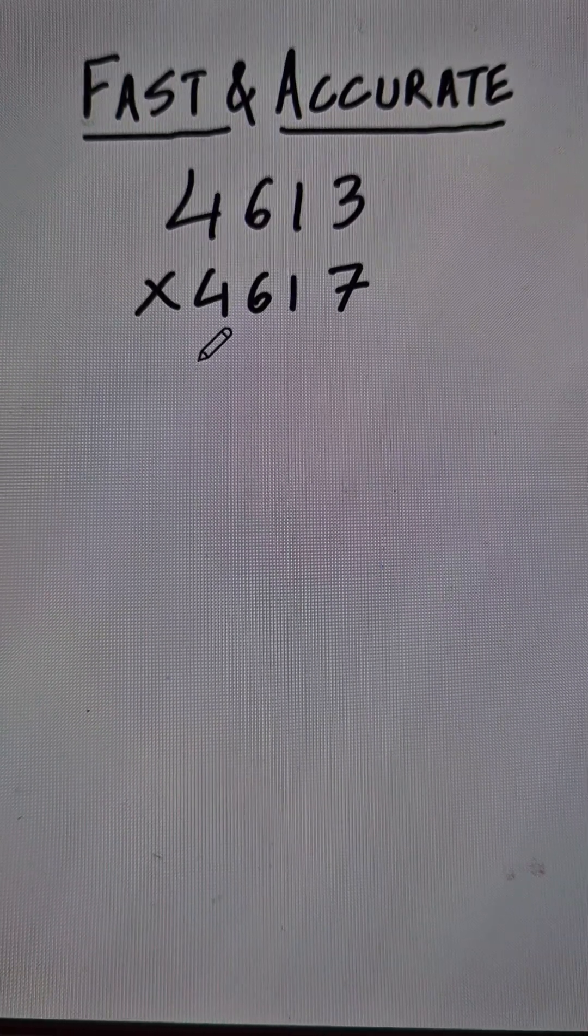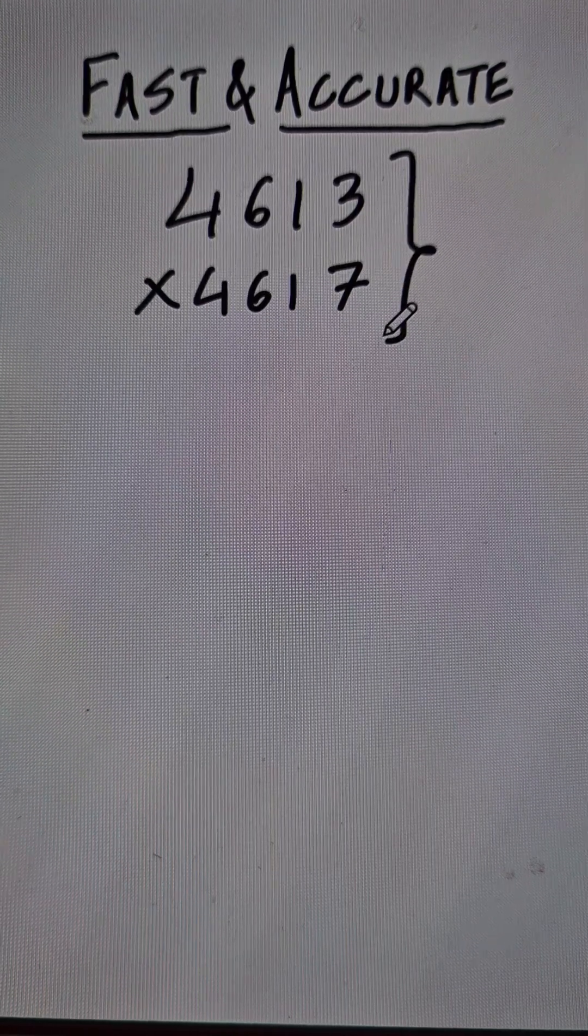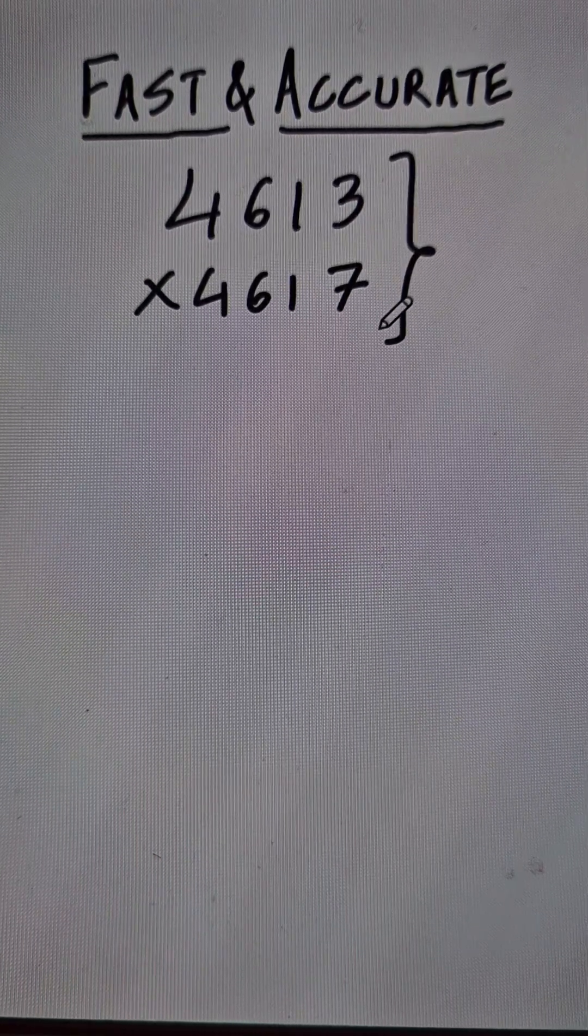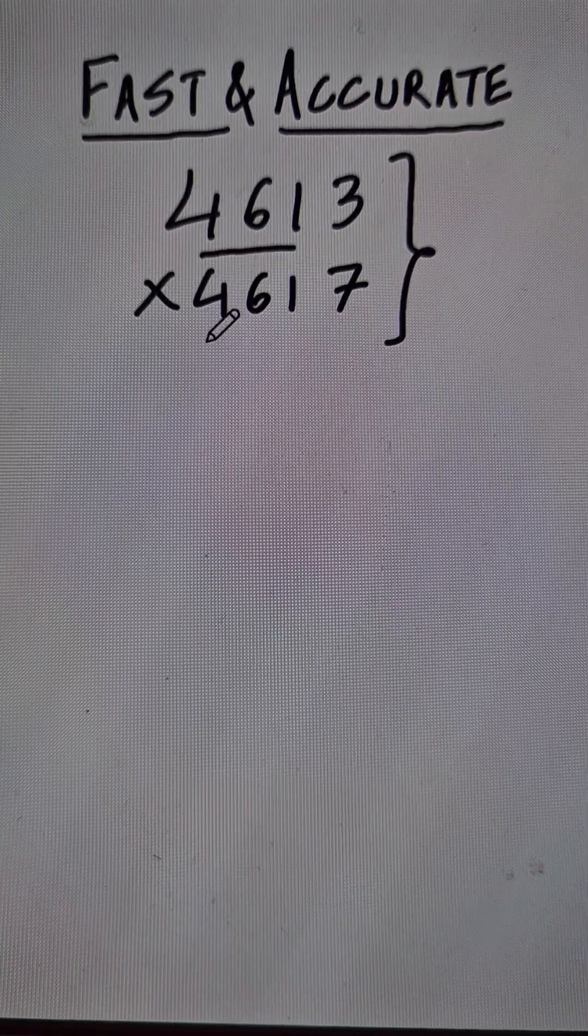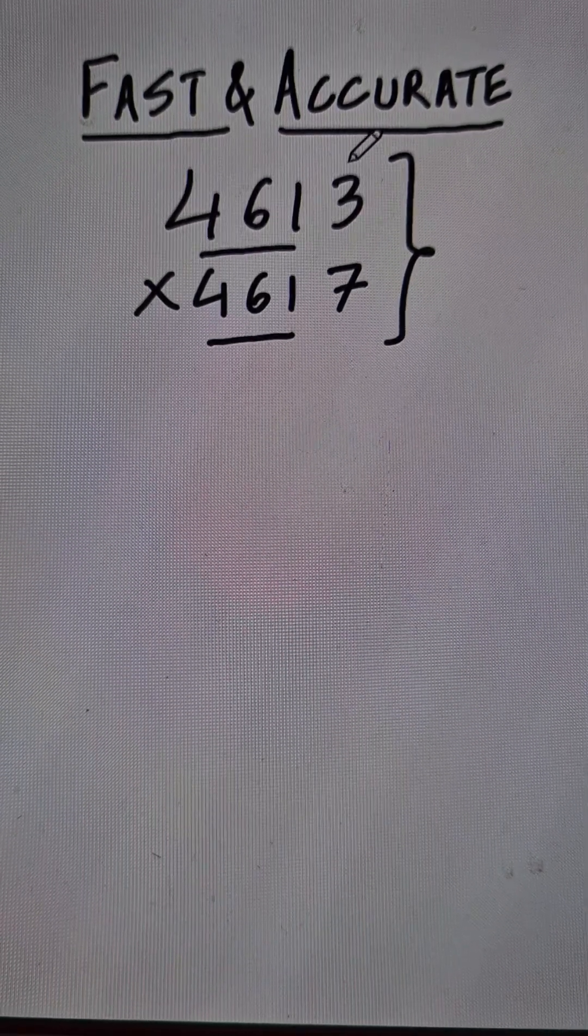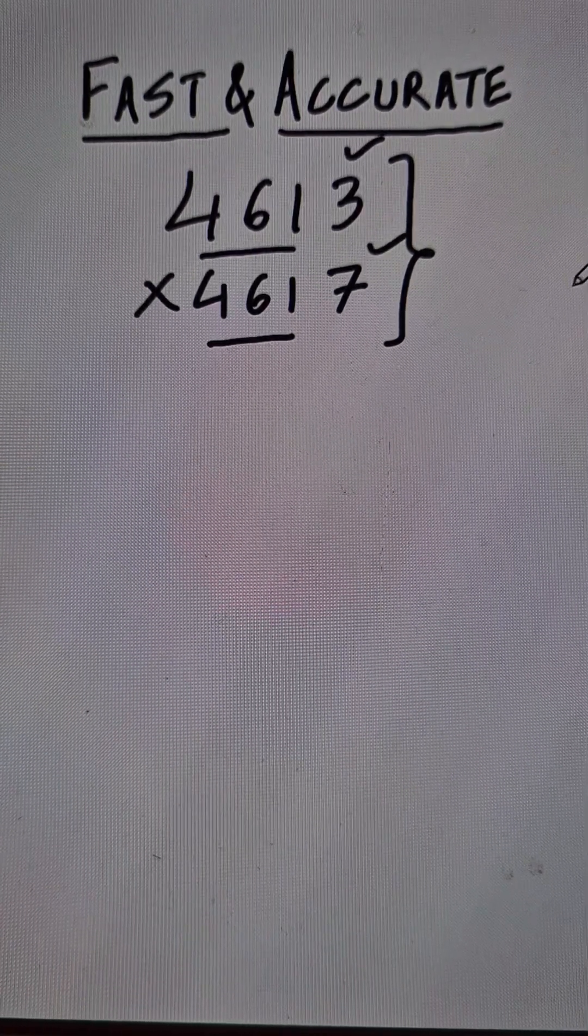If you use Vedic Maths, you can actually multiply it very quickly. Now, there is a special property here. You can see the first three digits here and the first three digits here, they are exactly the same. And the last digits 3 and 7, they add up to 10.